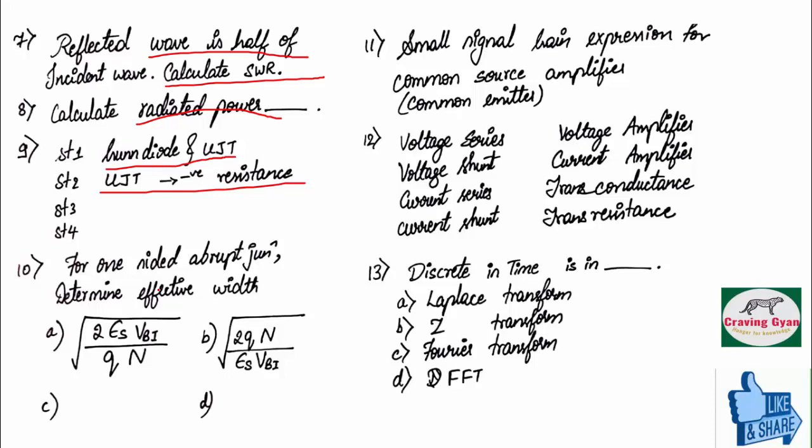Tenth question was based on EDC. For one-sided abrupt junction, determine effective width. For an N plus P, depletion width will be on P side. For P plus N, depletion width will be more on N side. This concept you have to remember.